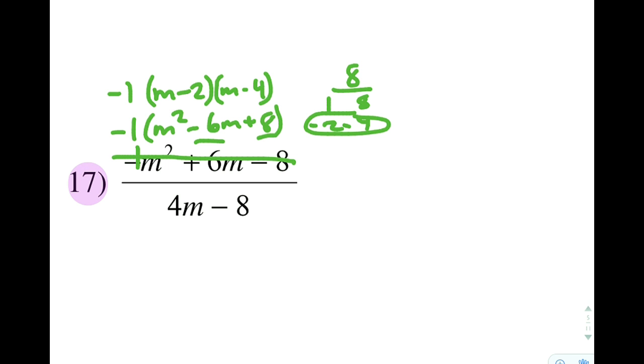And then I have to keep my negative 1 along for the ride. So then I just keep working upwards. So I crossed out my original and factored it. I crossed out that with the newly factored version. On the bottom, I have a 4 in common with everything, leaving me with m minus 2. I'm going to just cross that out.